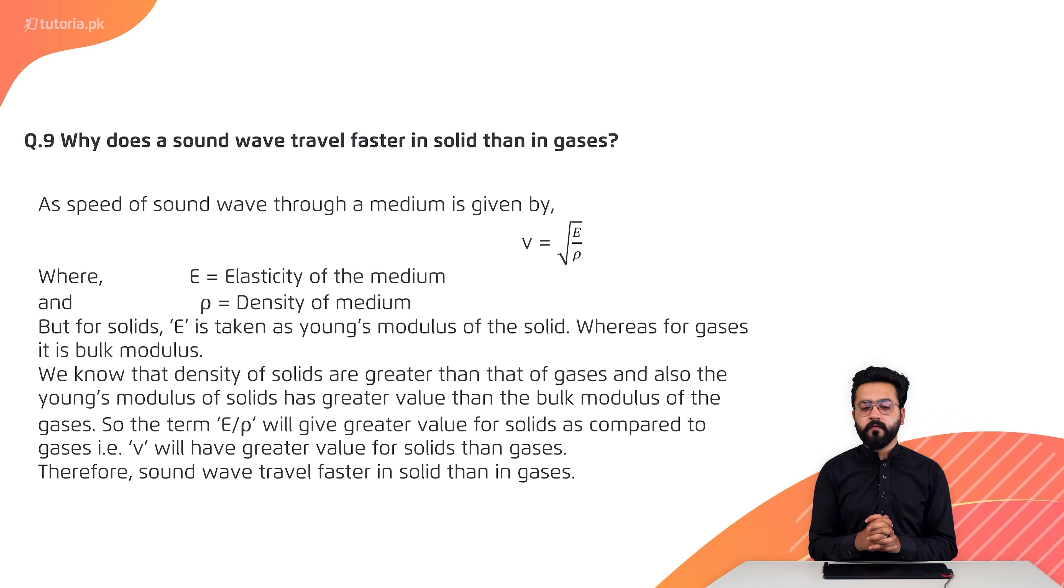As speed of sound waves through a medium is v equals under root E over ρ, where E is modulus of elasticity and ρ is density. But for solids, E is taken as Young's modulus of the solid, whereas for gases it is bulk modulus. E will be Young's modulus for solids and for gases it is bulk modulus.